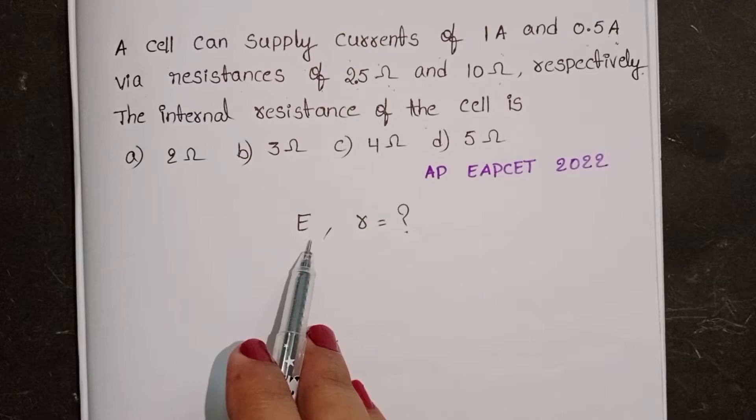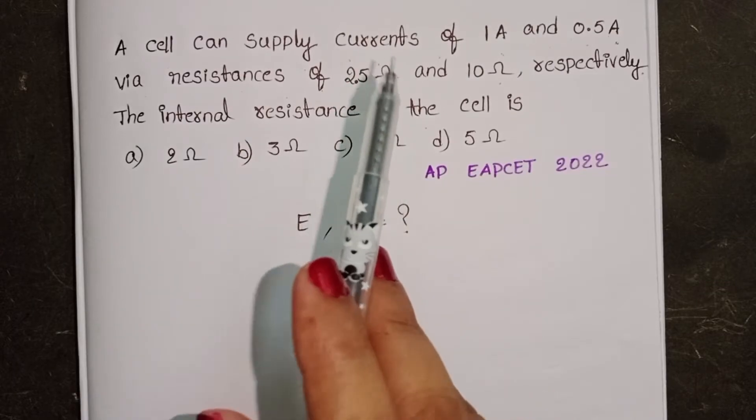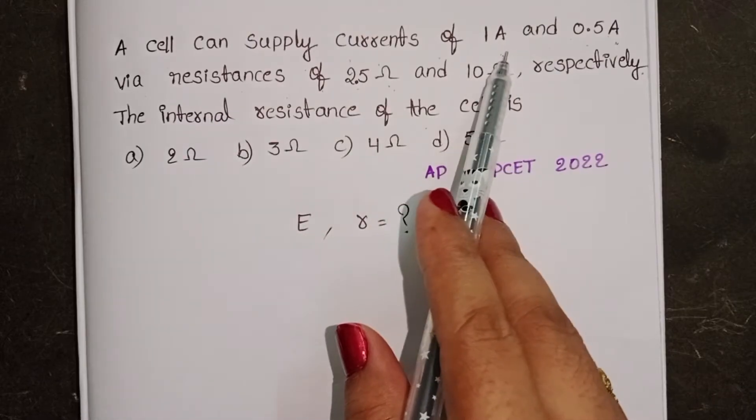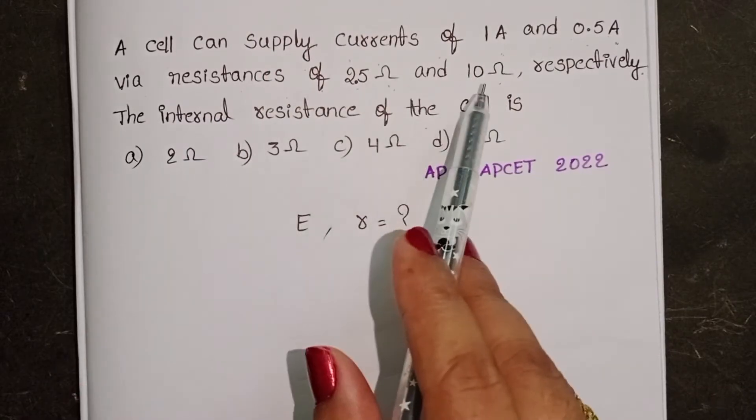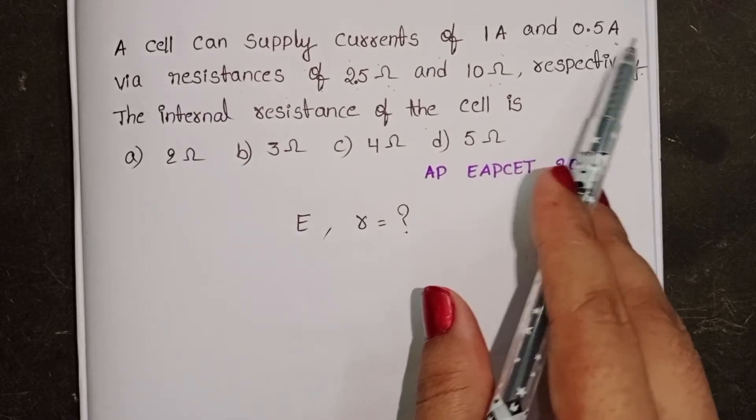When this cell is connected to 2.5 Ohm resistor, then it draws a current of 1A. And after then it is connected to 10 Ohm resistor, then current is 0.5A.